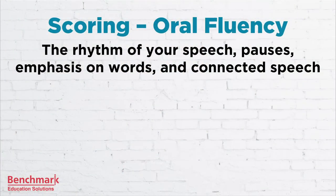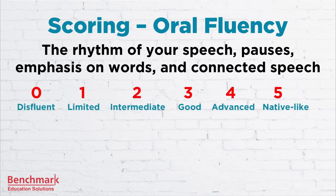The second scoring criteria, oral fluency, is very similar to pronunciation, but oral fluency is more about the rhythm of your speech, the pauses you use, emphasis on words, and connected speech. Essentially, this means there should be no pauses, repetitions, or hesitations. The scoring rubric for oral fluency is similar to pronunciation, but you'll notice that 'disfluent' and 'limited' are included here. If you add unnecessary pauses you would lose marks, and you'll want to pay special attention to the stress you place on certain words.